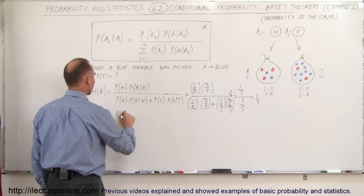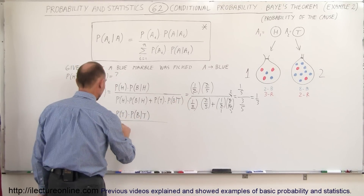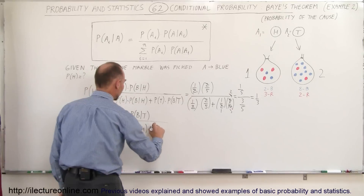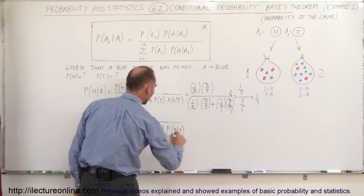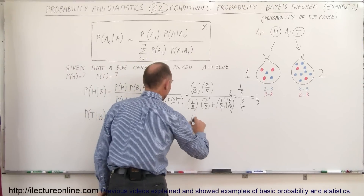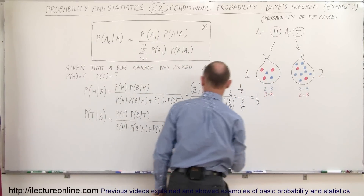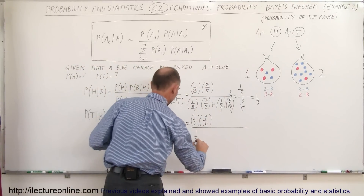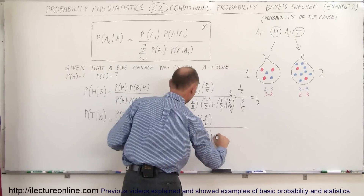The probability of getting tails, times the probability of pulling a blue marble provided we toss tails, divided by the same denominator as before: the probability of getting heads times the probability of a blue marble given heads, plus the probability of tossing tails times the probability of pulling a blue marble given tails. The denominator is identical to the previous calculation.